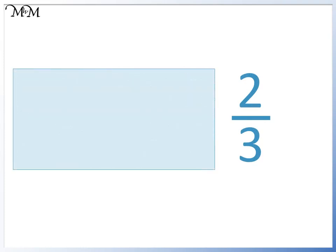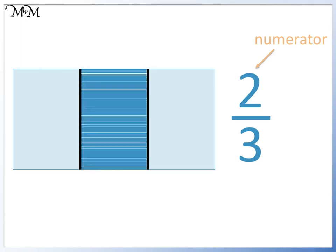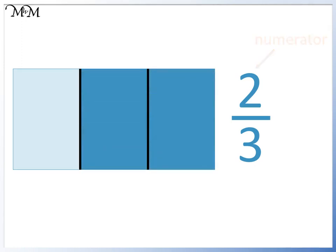We are asked to shade in two-thirds of this shape. We know that the denominator is 3, so the shape must be split into three parts. The numerator is 2, so this means that we shade in two parts.